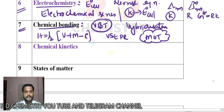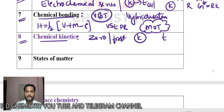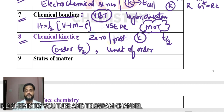On day 8, study chemical kinetics. We have zero order and first order reactions. Remember how to calculate the rate constant K and how to calculate half-life T½. Understand how half-life is related to initial concentration and order. Also remember the units of rate constant for different orders — what is the unit for first order, what is the unit for zero order. Remember the graphs as well.